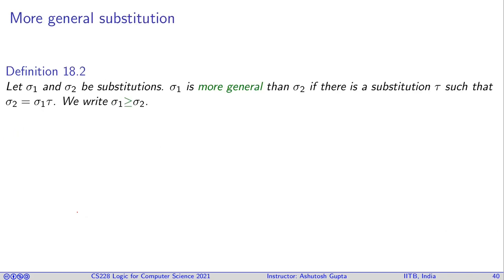There is one more important concept called more general substitution. Given two substitutions — this is a property of substitutions themselves, not with respect to any specific terms t and u — sigma_1 is more general than sigma_2 if there exists a third substitution tau such that composing sigma_1 with tau gives you sigma_2. So sigma_1 becomes the more general substitution and sigma_2 the more specific one.